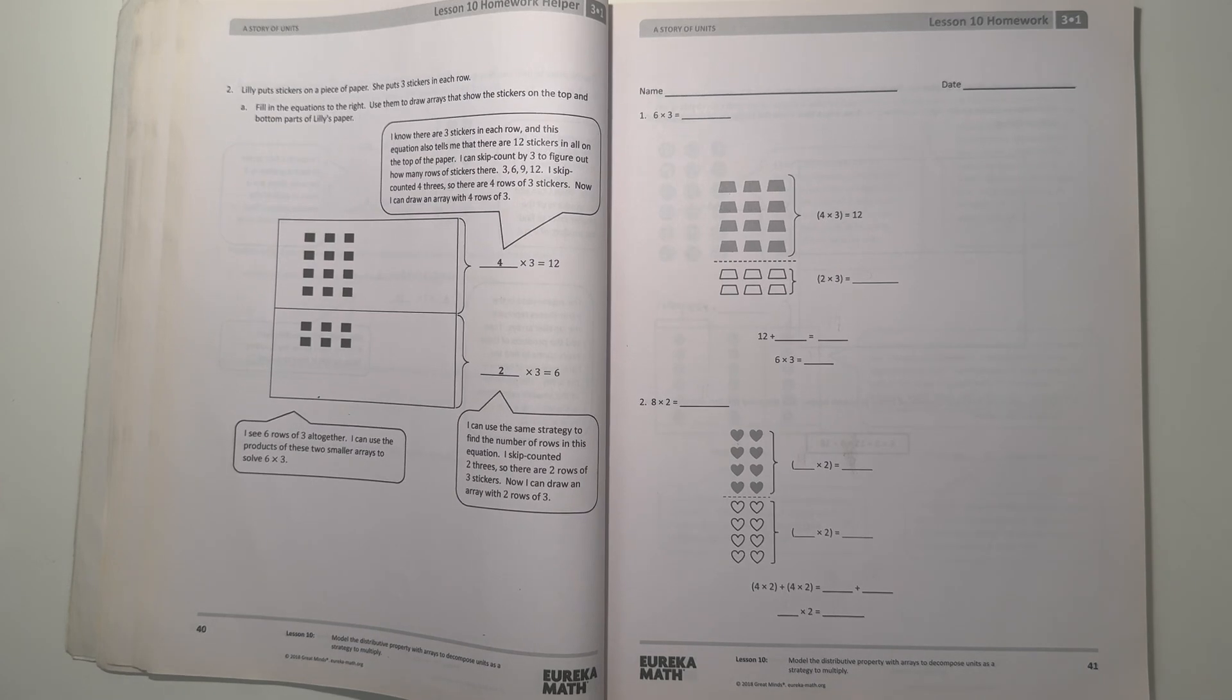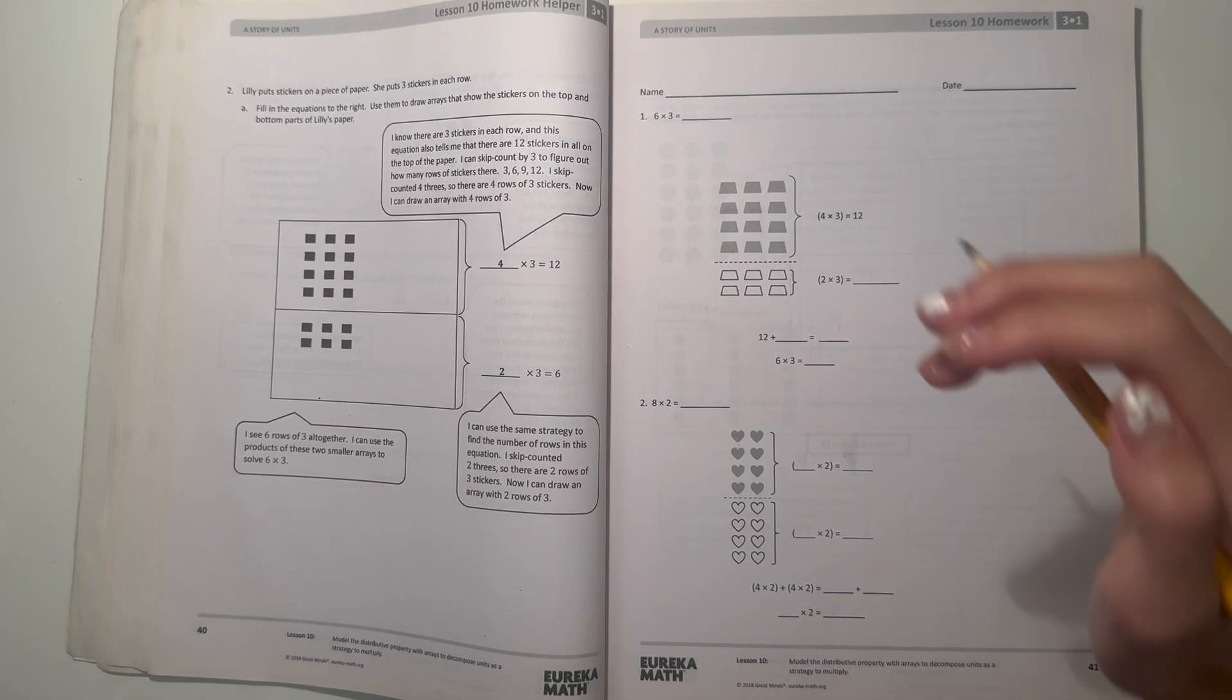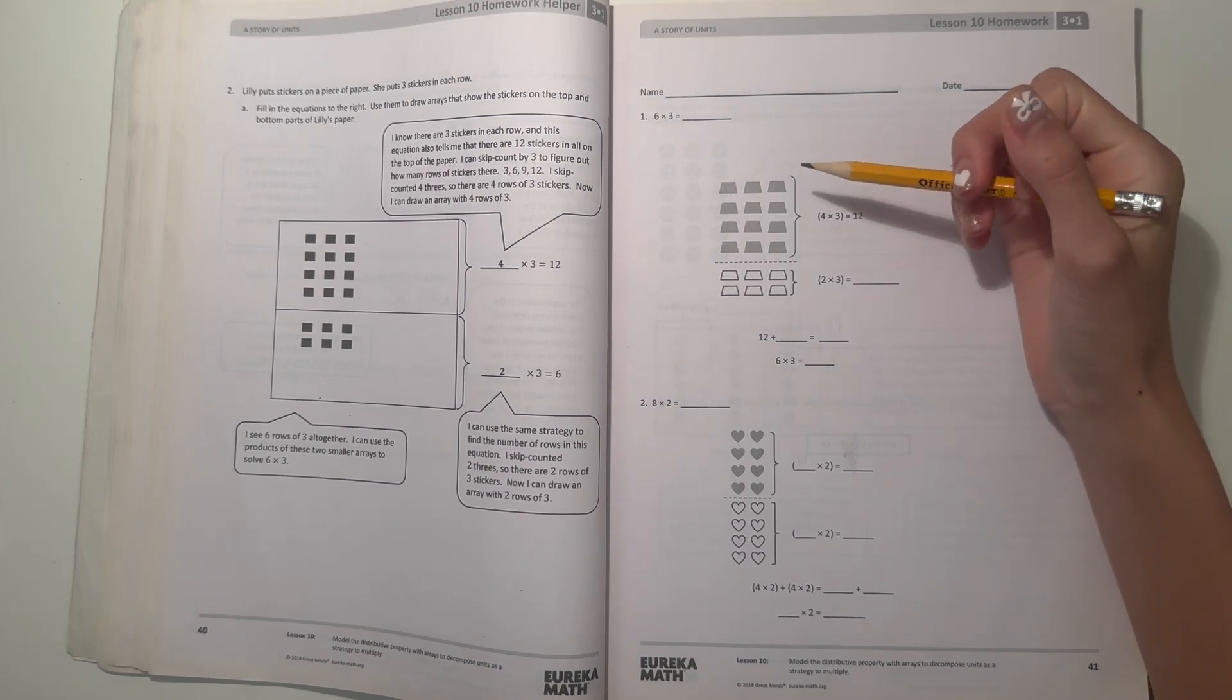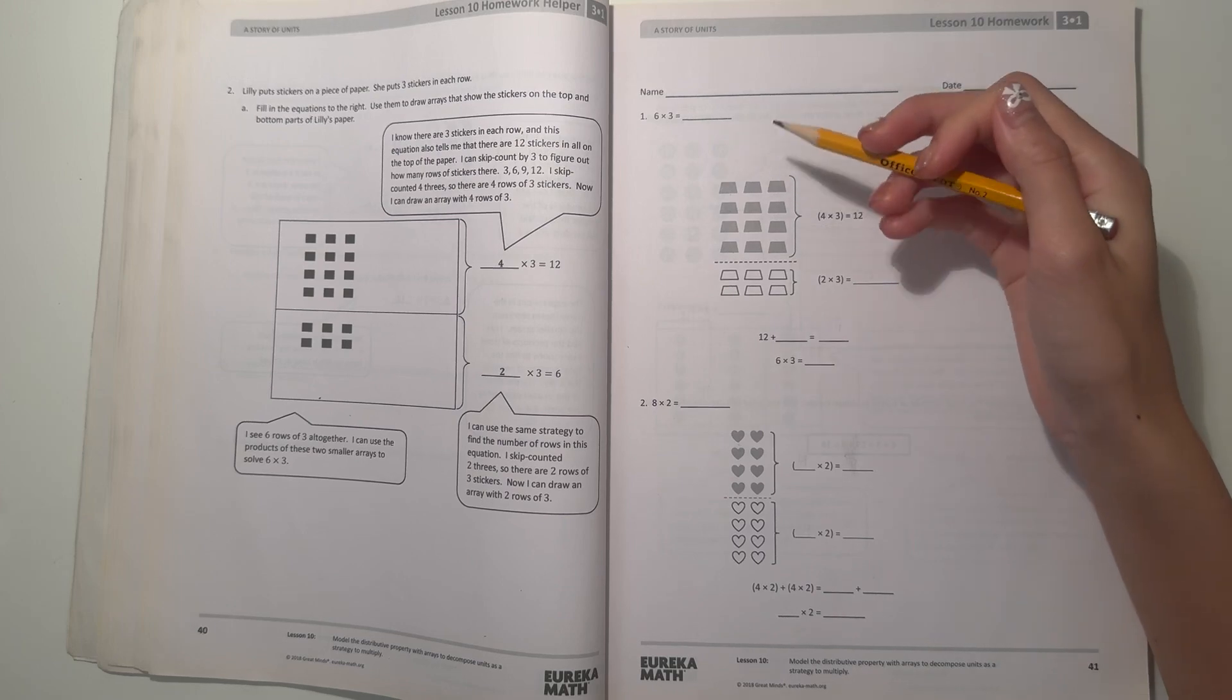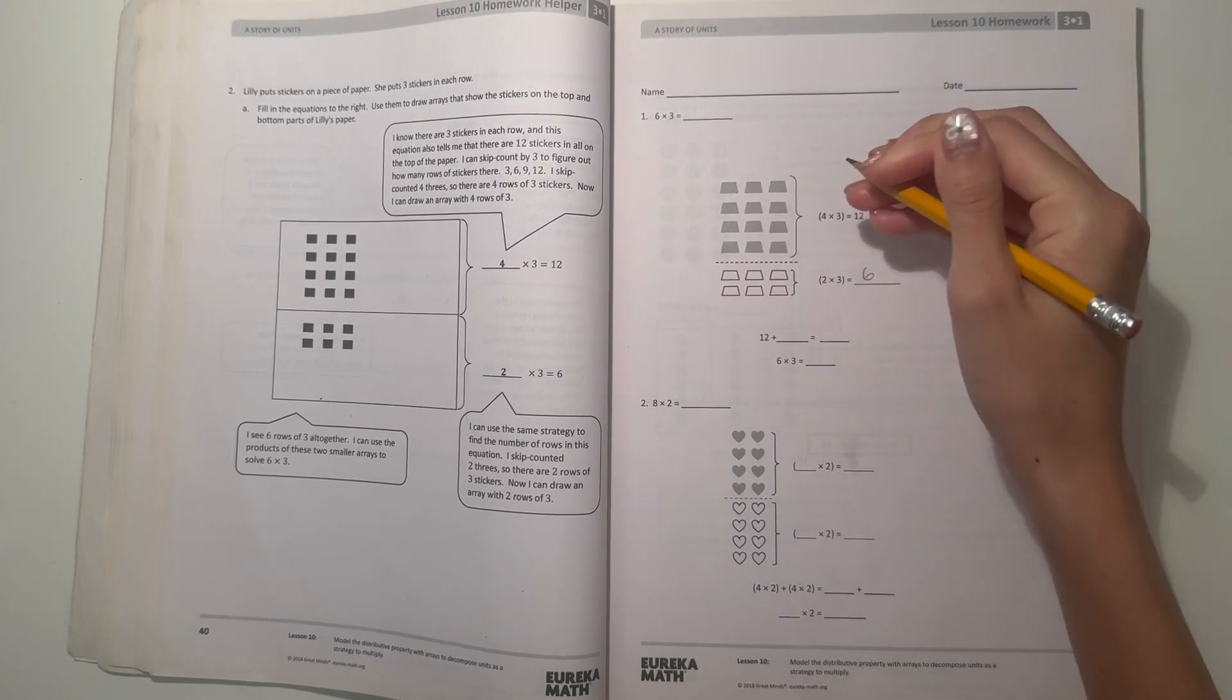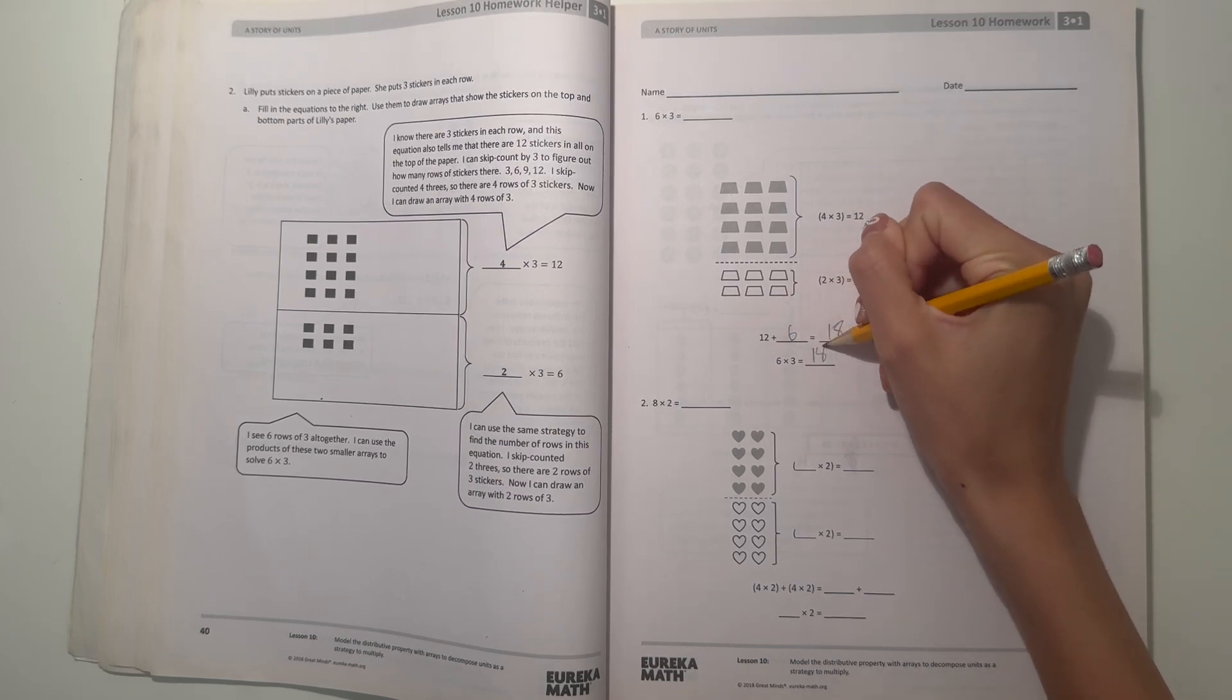Hey guys, we're here today. I'm doing the Eureka Math Grade 3 Module 1 Lesson 10 homework, so let's get started. Number one: six times three. Here we have an array to represent six times three. We have four times three equals twelve, so where they got that is four because there's four rows and there's three in each row. So four times three, and then two times three, so two rows of three. Let's fill in that six. We have twelve plus six is eighteen, which means six times three is eighteen.